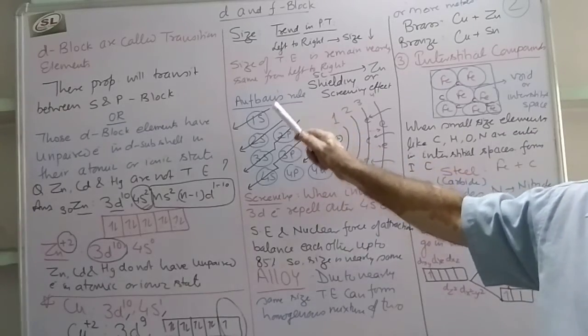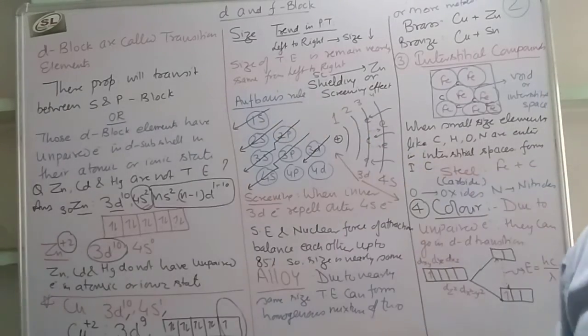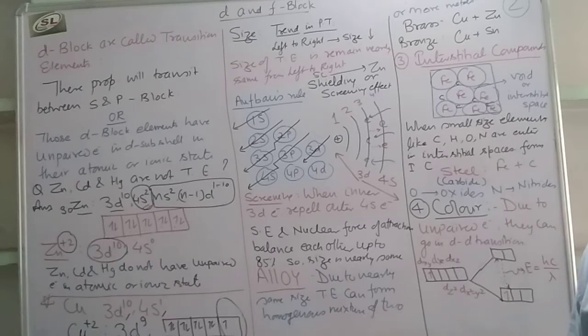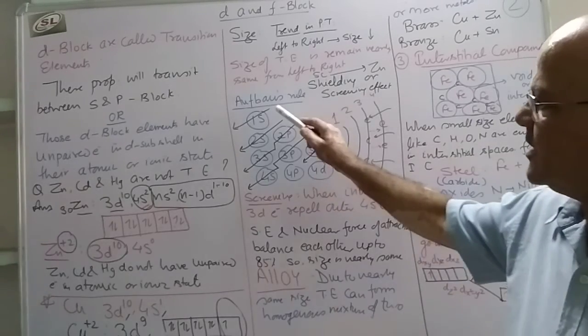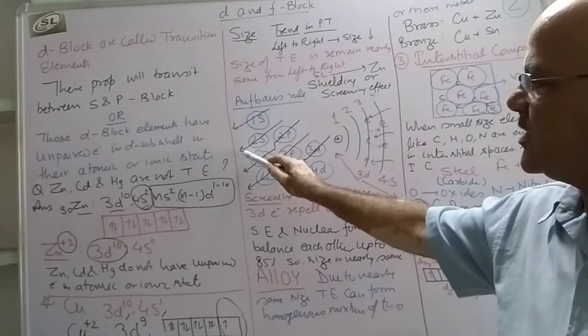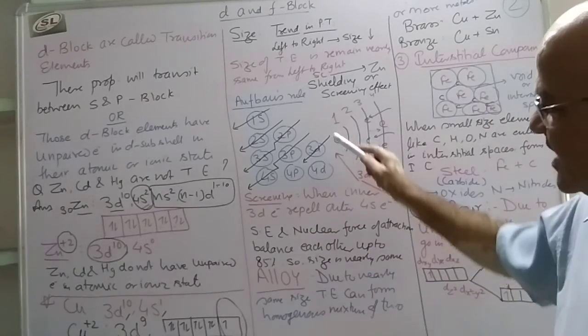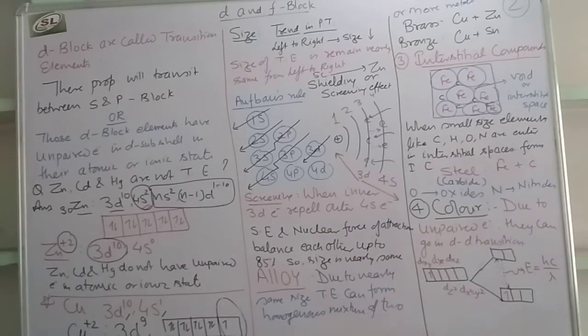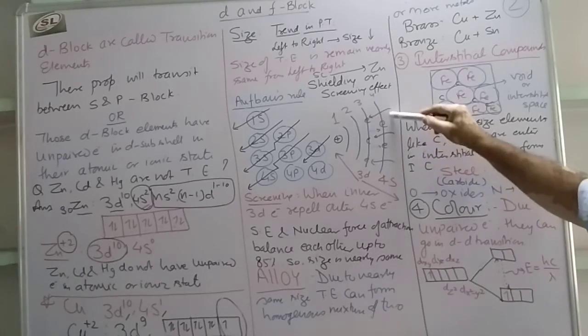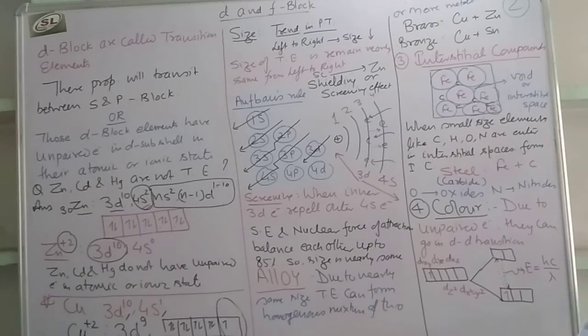First of all we will see - electrons are filled in increasing order of energy. In the Aufbau rule, if we go from left, electrons will fill in increasing order of energy. You can see electron fills 1s, then 2s, 2p, 3s, 3p, 4s, and then after that 3d will fill. You can see 4s gets 2 electrons already before the filling of 3d.